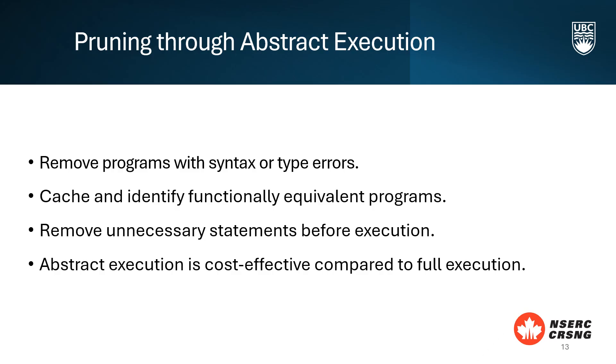Let's now look at the next search technique, Pruning Through Abstract Execution. This technique is crucial for keeping our program search space efficient and manageable. First, we tackle errors head-on. We perform an abstract execution step that enforces variable types and shapes, catching any syntax or type errors before the program even runs. If errors are detected, we keep mutating the parent program until we generate a valid child.